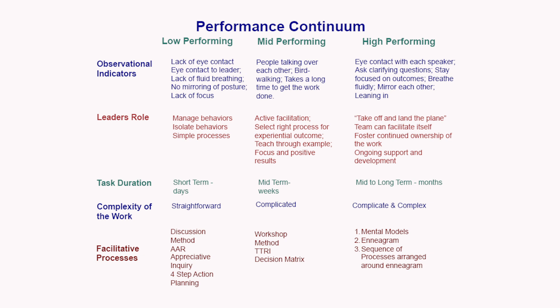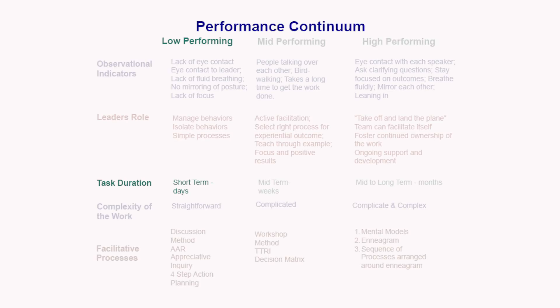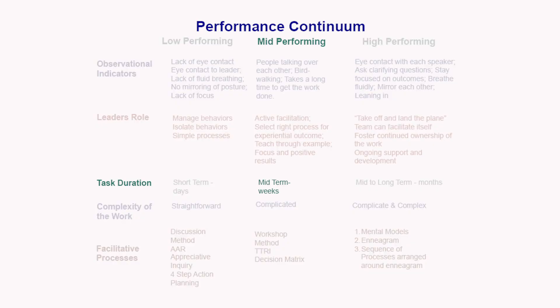The next tier talks about the duration a task needs to run from start to finish. For a low performing team, it's often the span of a single meeting — they don't have the patience or capability to tackle bigger issues, so you give them short chunks of work. A mid performing team can take on tasks spanning three or four meetings. It's the high performing team that takes on long-term work — they have the patience, discipline, and confidence for it.